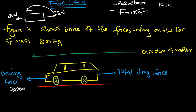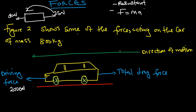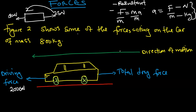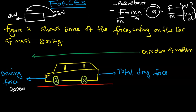Mass should always be in kilograms, and acceleration is in meters per second squared. Multiplying these two gives you the force. When you want to find acceleration from this formula, you make acceleration the subject — acceleration equals force divided by mass. Given the force in Newtons and mass in kilograms, we can still find acceleration. So we shouldn't just stick to the formula acceleration equals change in velocity divided by time taken.